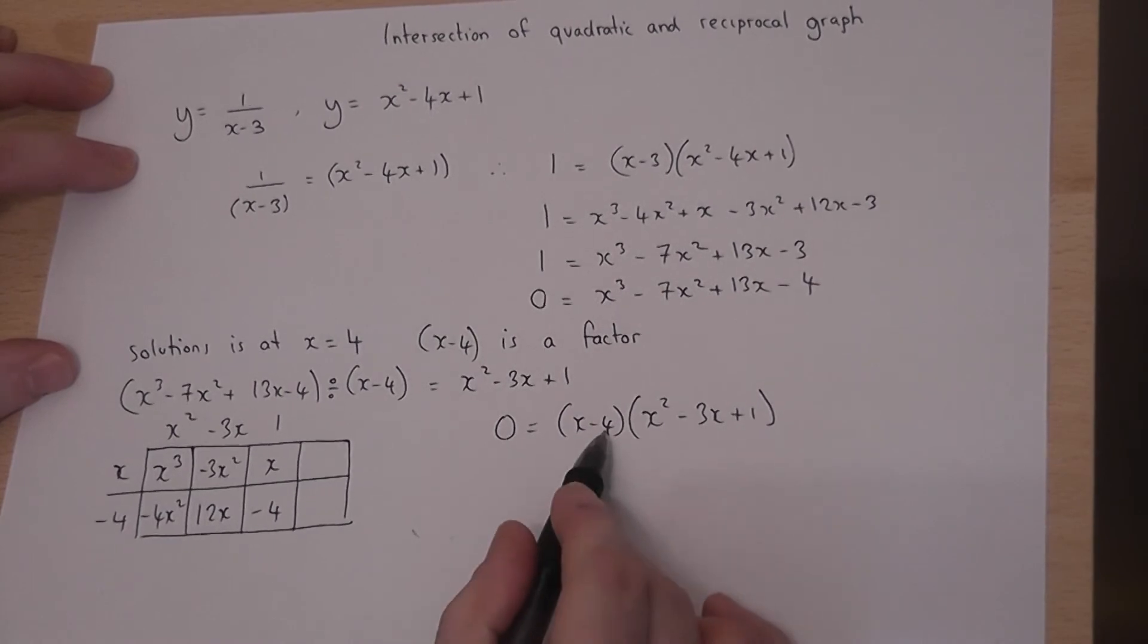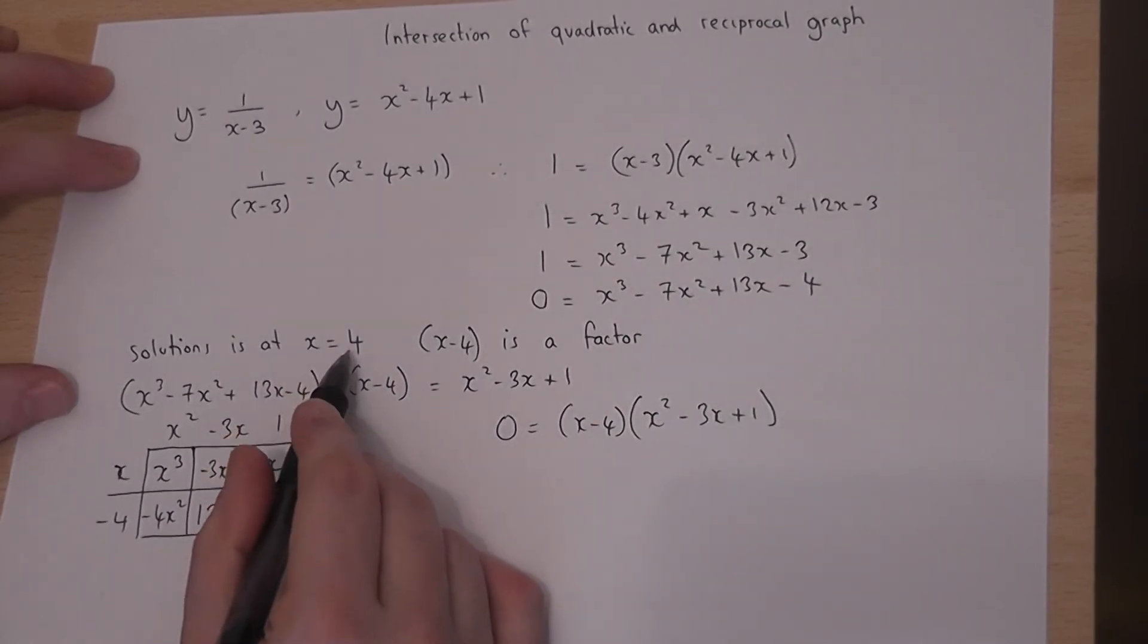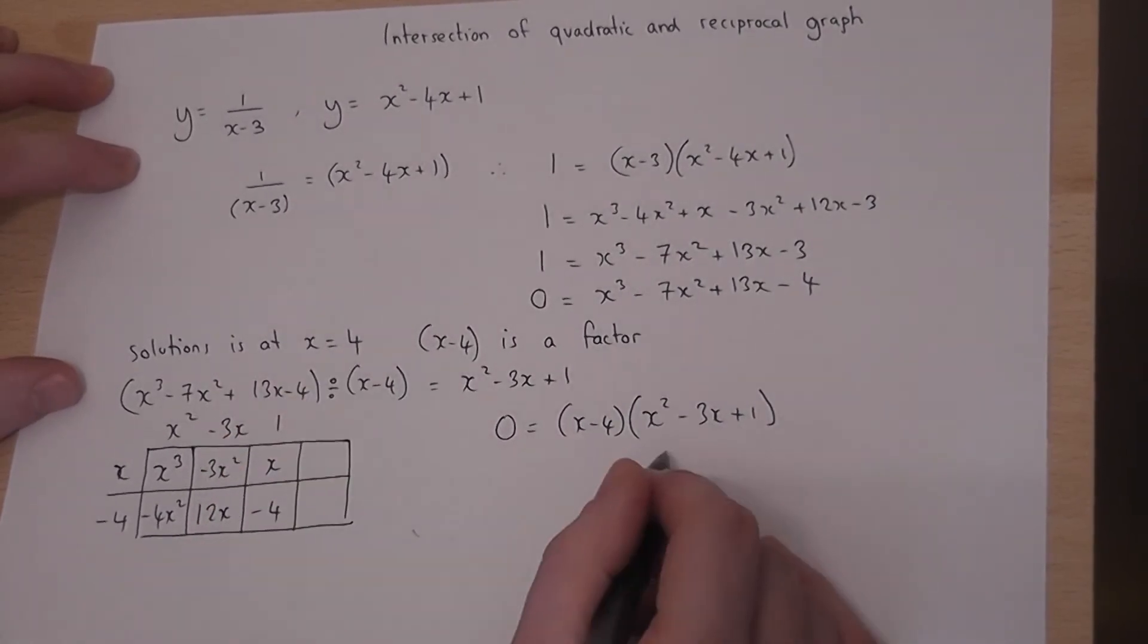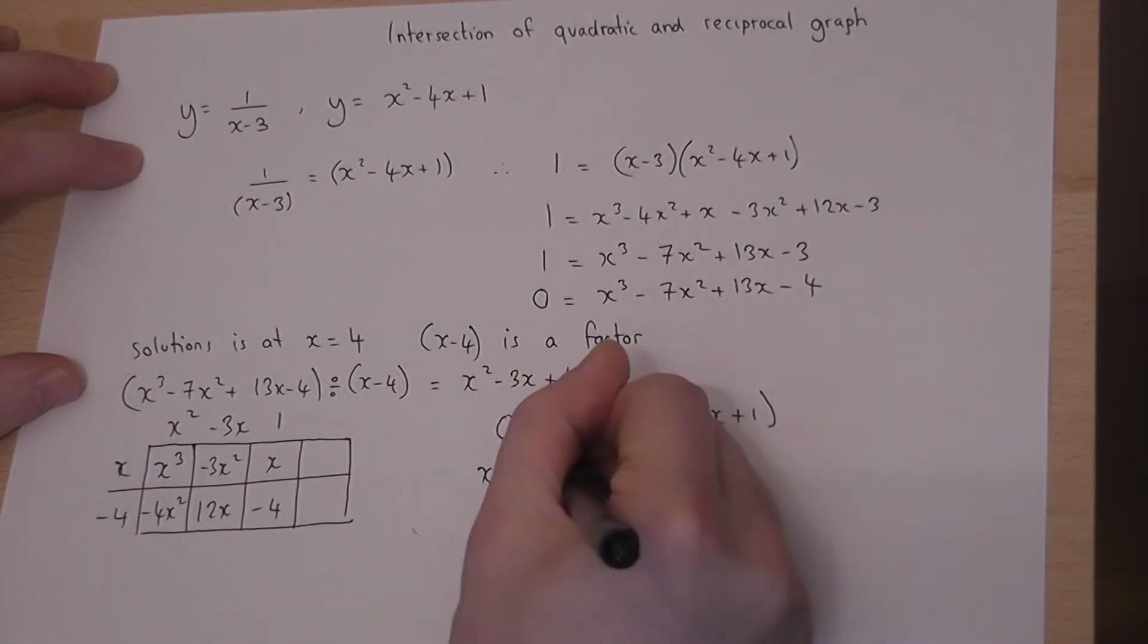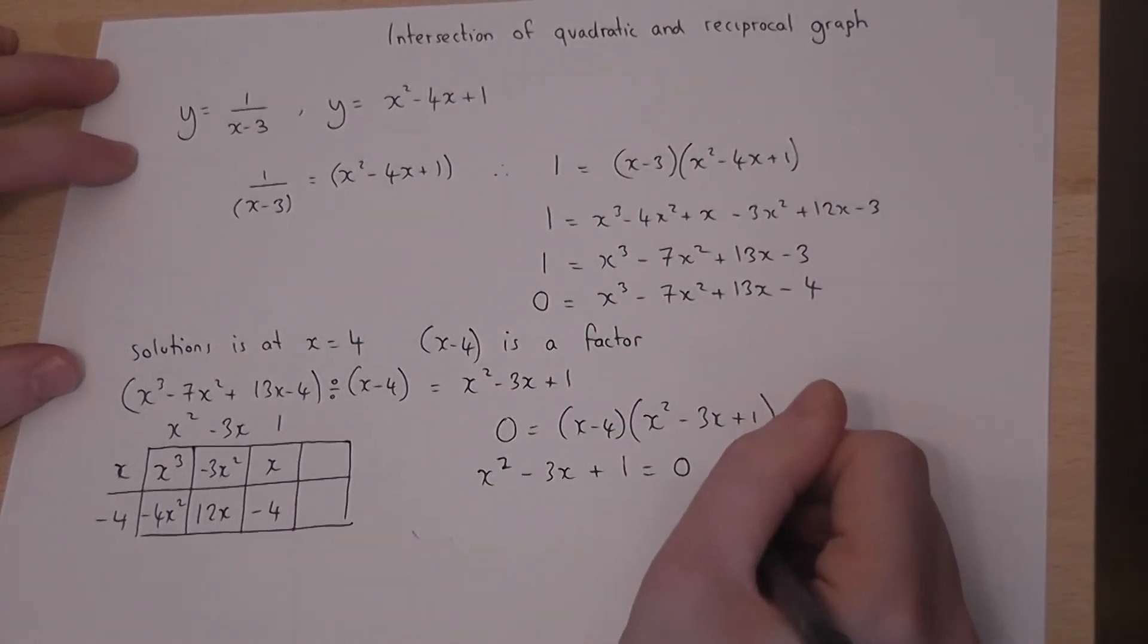That's my known factor, which gives my known root. To find the other two solutions, I must somehow try and solve x² - 3x + 1 equals 0. And to do that,